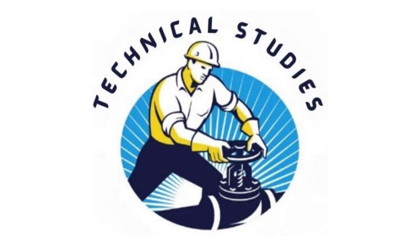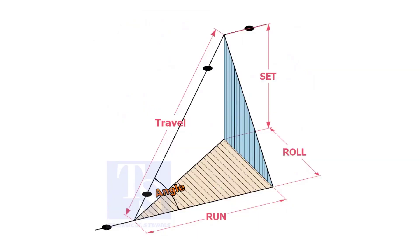Welcome to technical studies. In a piping drawing of a double rolled offset, usually the dimensions of the run, set and roll are given.